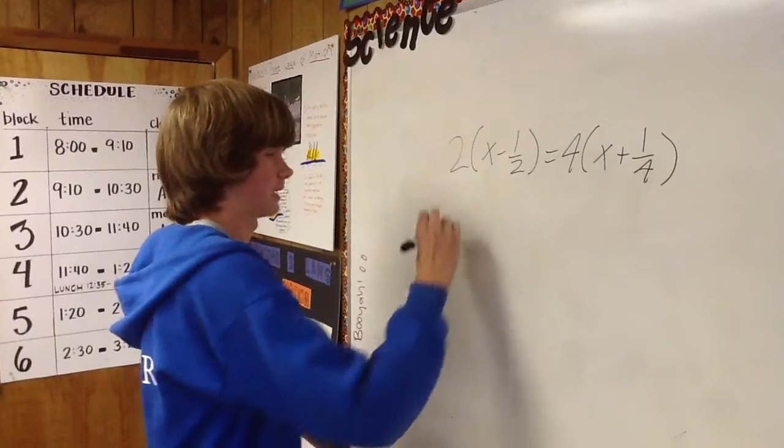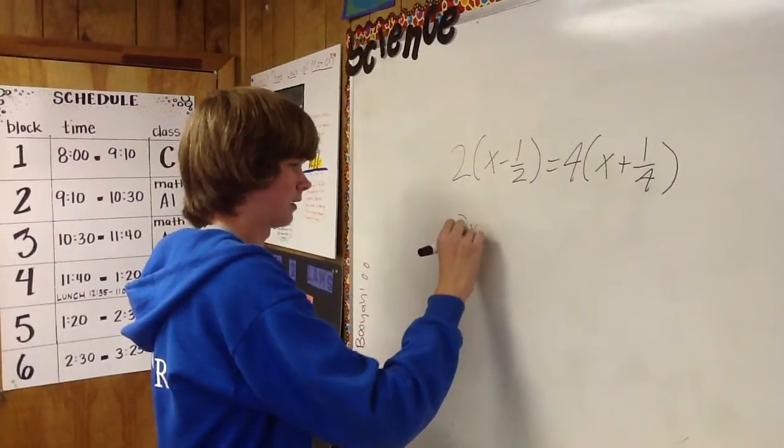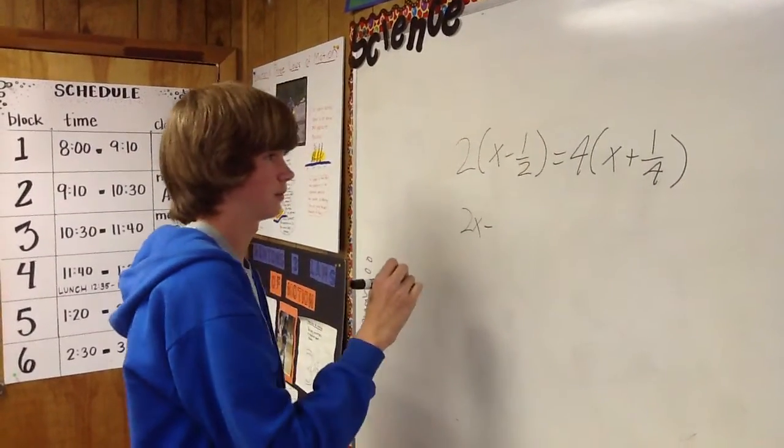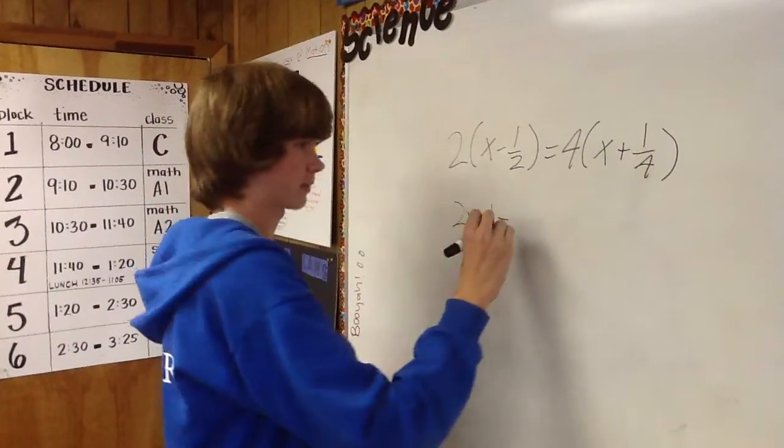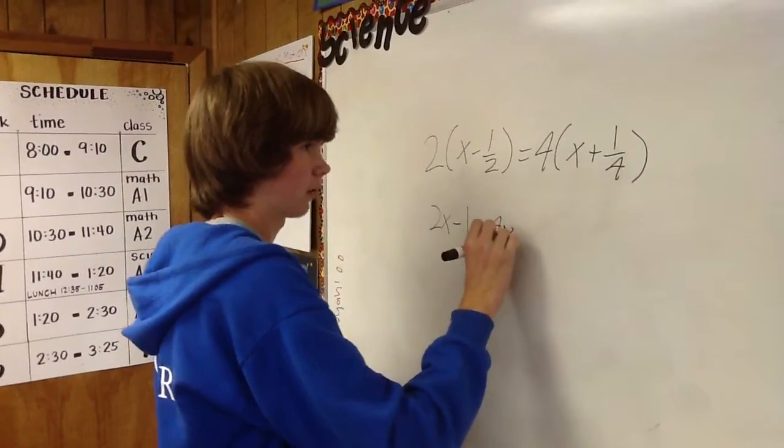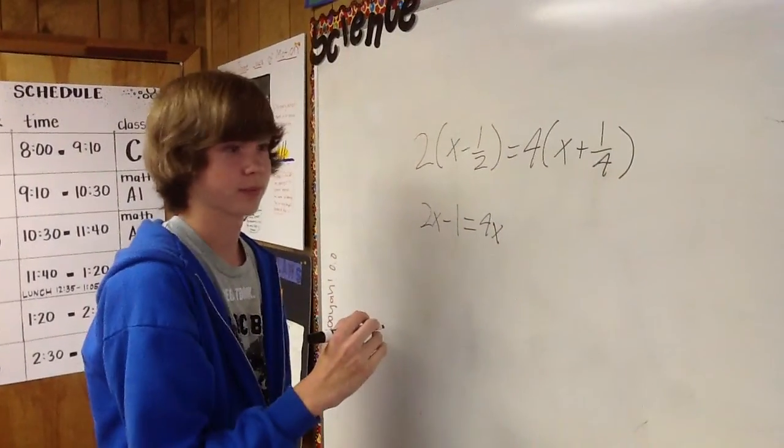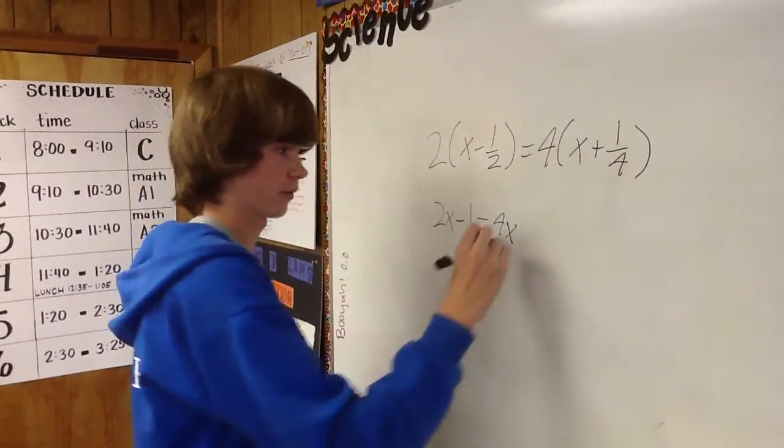So 2 times x is 2x minus 2 times 1/2, which is 1, equals 4 times x, which is 4x, and 4 times 1/4, which are reciprocals, so the answer is 1.